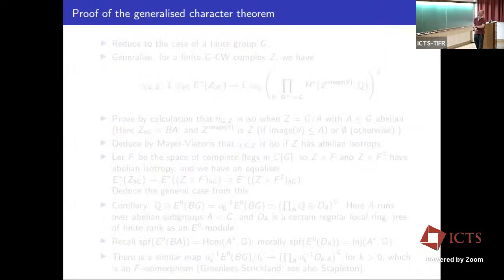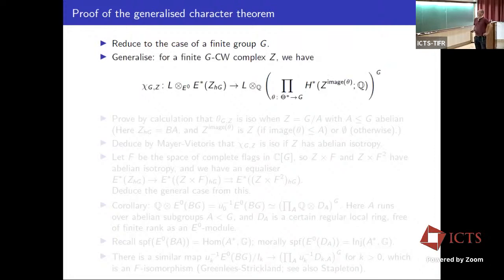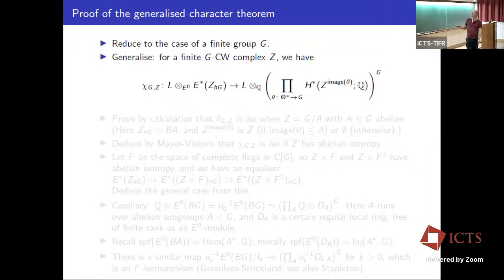Let's sketch the proof of generalized characters. We stated it for groupoids, but it reduces to the case of groups. The original statement was about BG — the Borel construction for a point with trivial G-action — but it's convenient to generalize to a finite G-CW complex Z and its homotopy orbit space Z_{hG}.